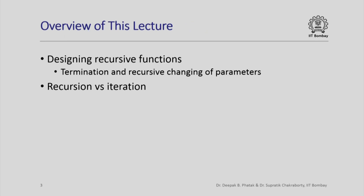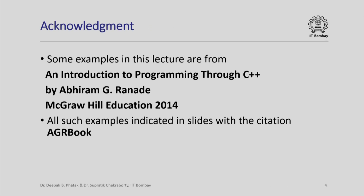In this lecture we are going to see how, when you are trying to design recursive functions, there are certain issues like termination and recursive changing of parameters that you should be careful about, and we are also going to see a very brief comparison of implementing a solution via recursion or via iteration. Some examples in this lecture are from the book 'An Introduction to Programming through C++' by Abhiramji Ranade, published by McGraw-Hill Education in 2014, and all such examples will be indicated in slides with the citation AGR book.